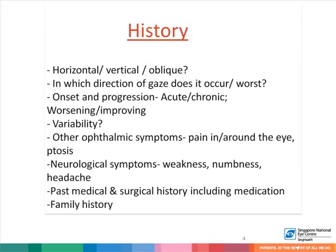When assessing for diplopia, history is essential and helps to point towards a probable diagnosis in most cases. When asking history from a patient with diplopia, one must check whether the diplopia is horizontal, vertical, or oblique, in which direction of gaze it occurs or is worst, what the onset and progression of diplopia was like, if it was acute or chronic — which gives a clue as to the etiology — and if it is worsening or improving.